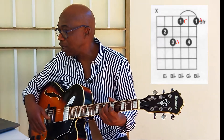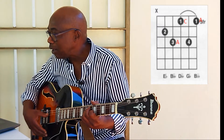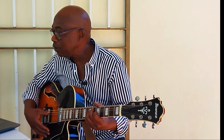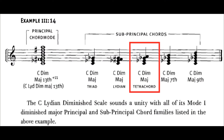With the diminished major seventh, you simply add the seventh — the B. And the C diminished major ninth is the same: you add the D and you have the major ninth. Once we have that, we can move to the chord section.